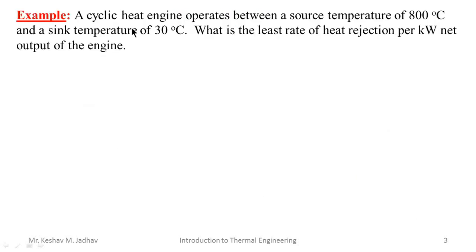Let us solve a numerical based on heat engine. A cyclic heat engine operates between a source temperature of 800 degrees Celsius and a sink temperature of 30 degrees Celsius. What is the least rate of heat rejection per kilowatt net output of the engine?